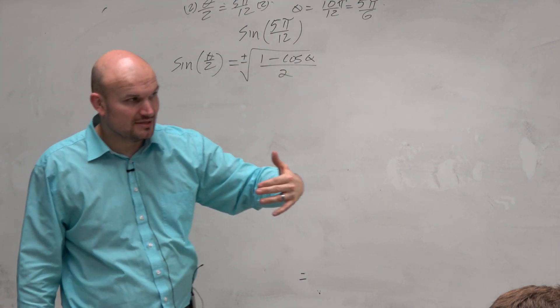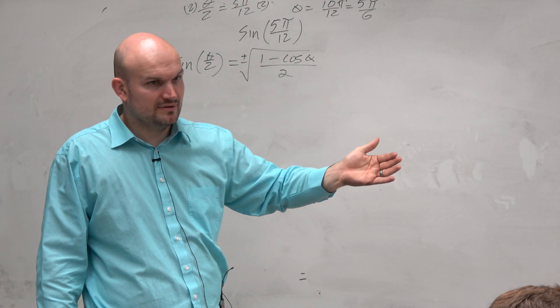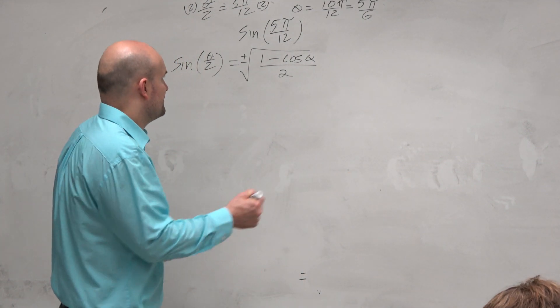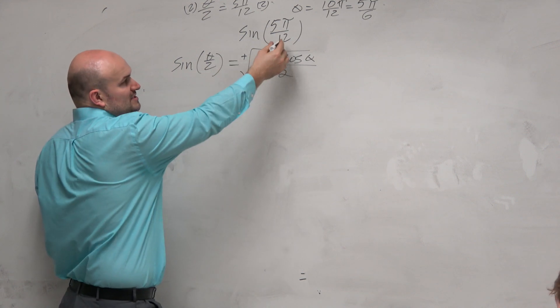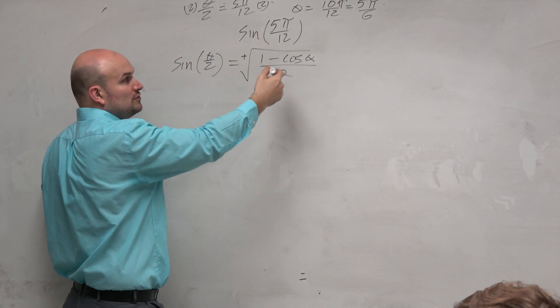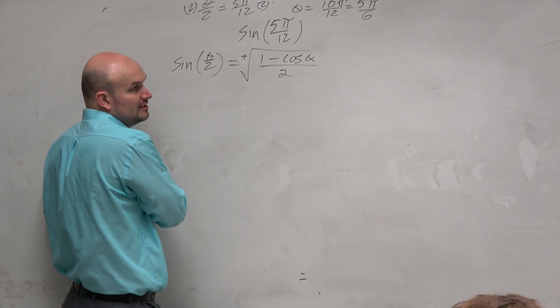So since this is still in the first quadrant, are sine and cosine both positive? Yes. So therefore, you don't need to include the negative, just the positive. If this was a half angle in the third or fourth quadrant, then you'd use negative.